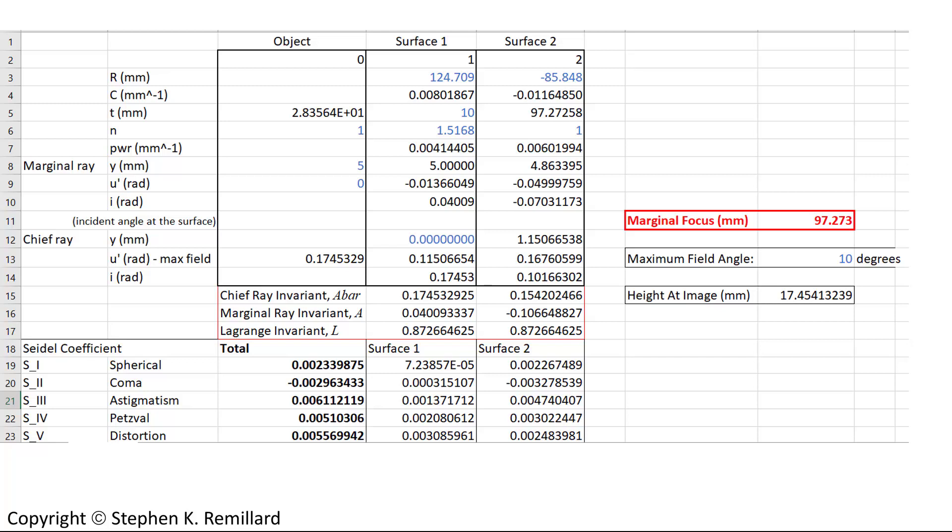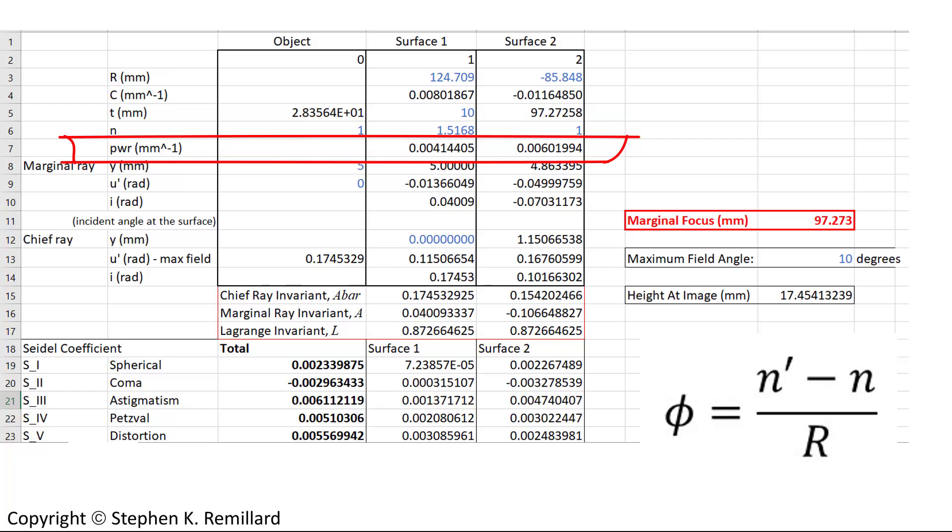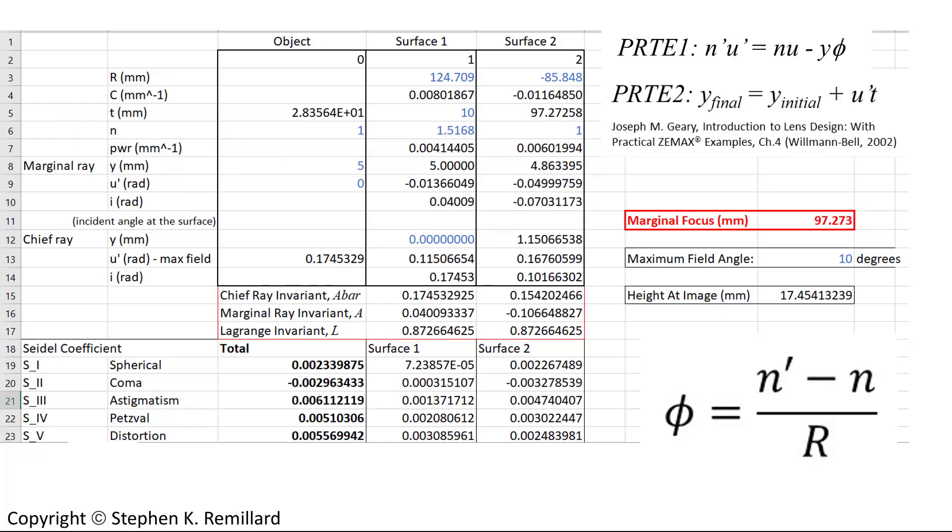It is a double convex lens. The front surface has a radius of curvature of 124.709 mm. The back surface is minus 85.848 mm. The refractive index is that of crown glass, NBK7. The powers are calculated, and the marginal ray height is propagated through using the paraxial ray trace equations, as well as the angles relative to the normal. The marginal ray emerges from the lens at a height of 4.86 mm, and an angle of minus 0.04999 radians. And from that simple triangle, the marginal focus can be calculated, 97.273 mm.